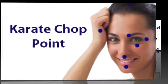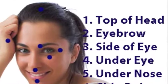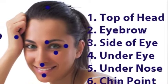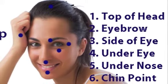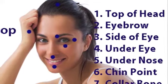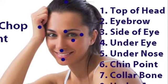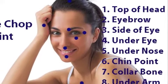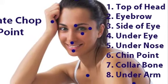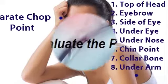Then we begin to tap on the top of the head position, and we just say the words that represent the problem: the burning pain in the socket of my left shoulder. We tap on the eyebrow point, again repeating the reminder phrase, the side of the eye point, under the eye, under the nose, on the chin, on the collarbone, and under the arm — each time repeating the phrase: the burning pain in the socket of my left shoulder.